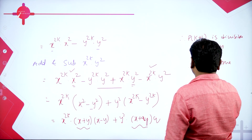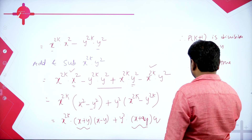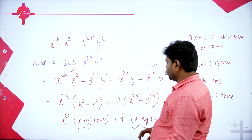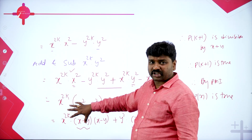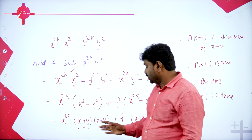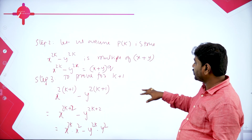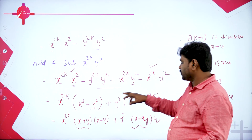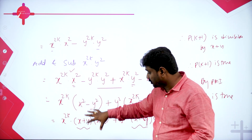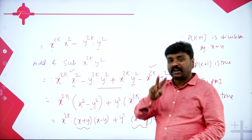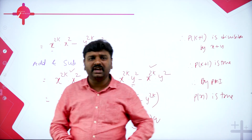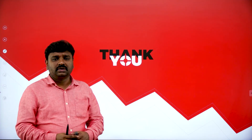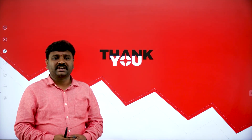Therefore by PMI the statement P(n) is true. What we have done: x^2 - y^2 is divisible by x+y because it factorizes, and the part x^(2k) - y^(2k) we assumed is a multiple of x+y. So the first term is divisible by x+y and the second term is divisible by x+y. If two terms are each divisible by x+y, the whole expression is divisible by x+y. I hope all of you understood. Thanks for attending, I will see you in my next session. Thank you.